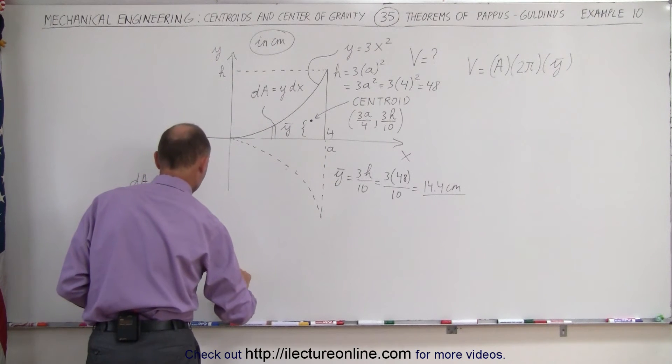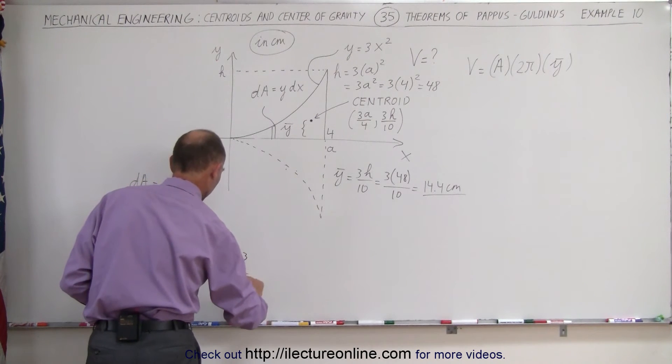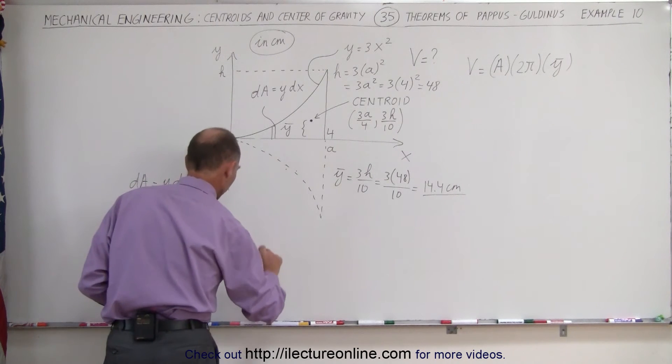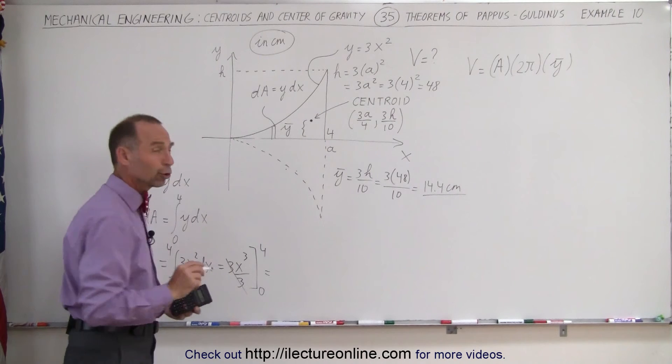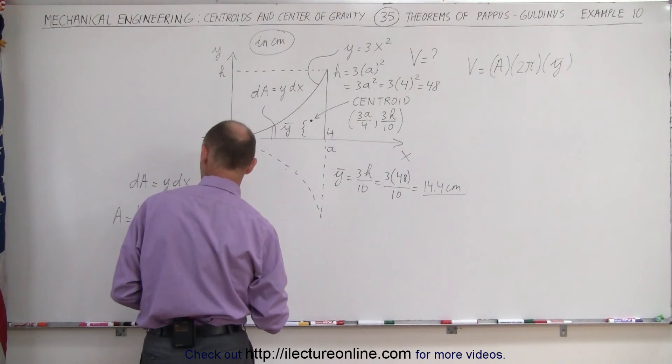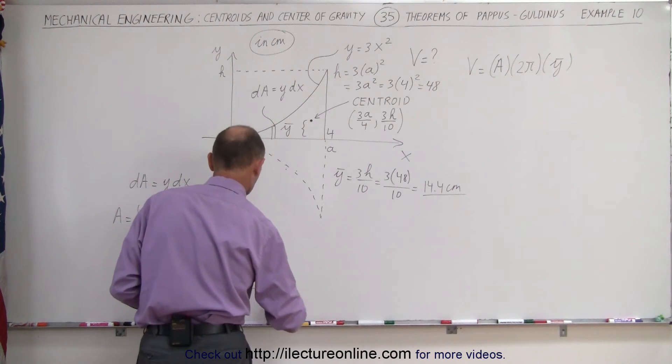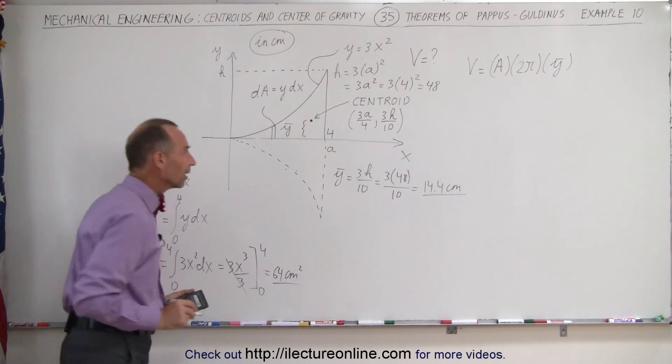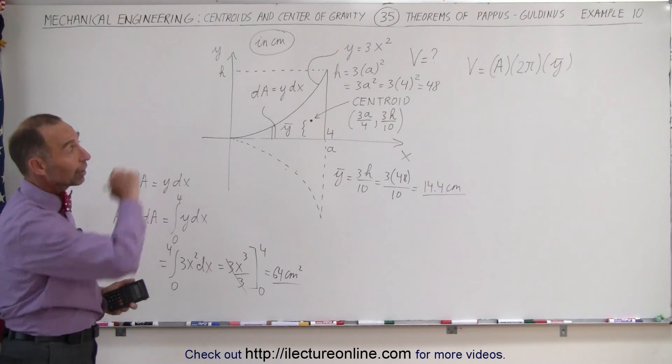You can take the 3 outside the integral sign. This becomes 3 times x cubed over 3. The 3s cancel out and we have to evaluate it from 0 to 4. When we plug in a 4 here we get 4 cubed which is 64 and that would be the area. That would be 64 centimeters squared for the area.